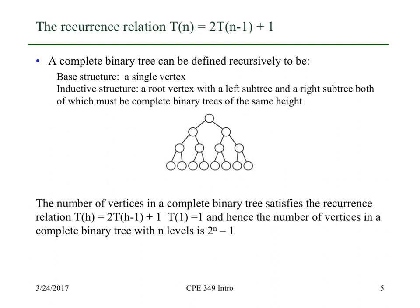For this situation, the number of vertices in a complete binary tree satisfies the recurrence relation. Just think about this structure. We have a single vertex, and then we have two trees of one less height. Hence, the number of vertices in a complete binary tree with n levels is 2^n - 1. We know that because it satisfies this recurrence relation with this initial condition, and we just proved that this will be the closed form solution.